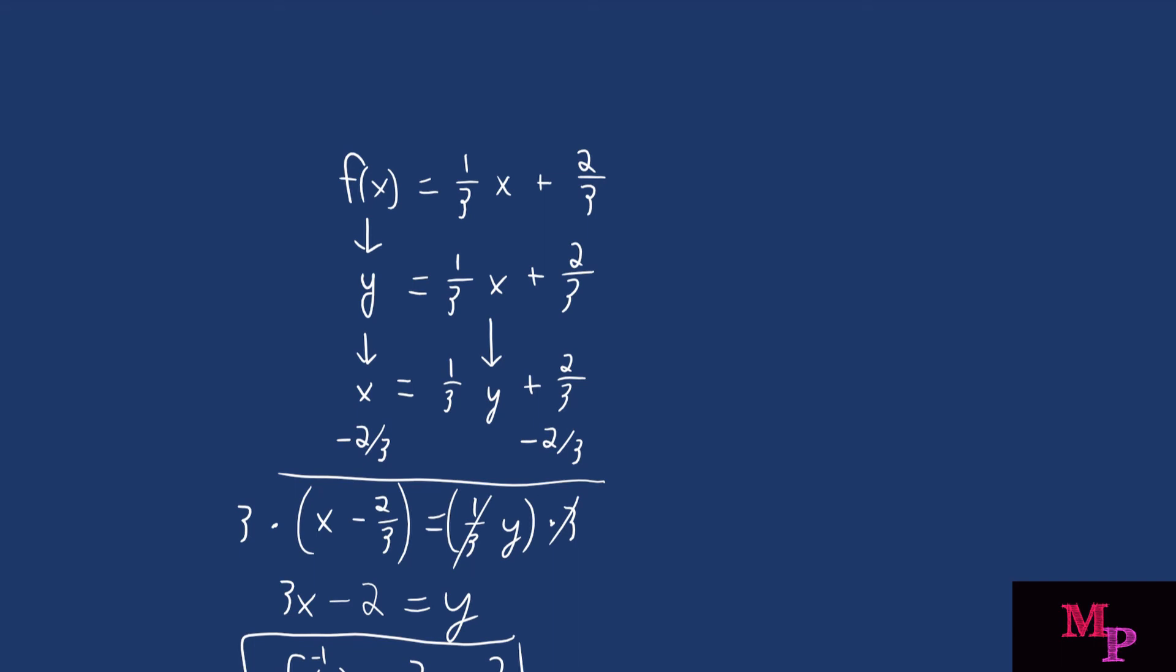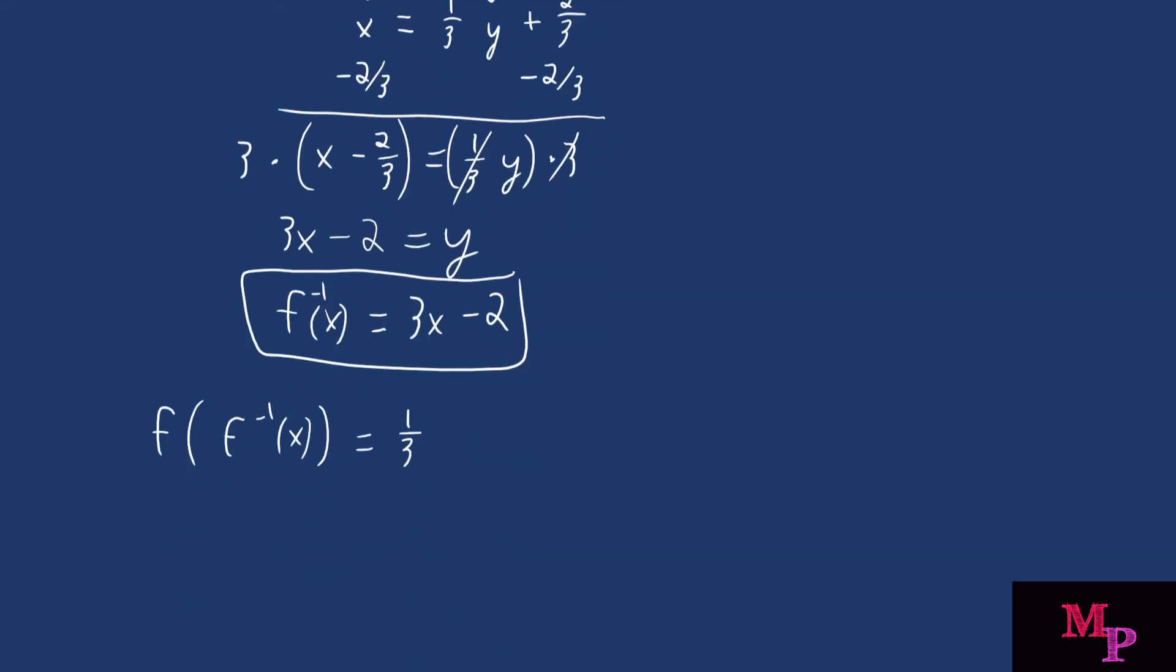The only time we see x is when it's being multiplied by one-third. So instead of x, we're going to have three x minus two. So one-third times three x minus two plus two-thirds.